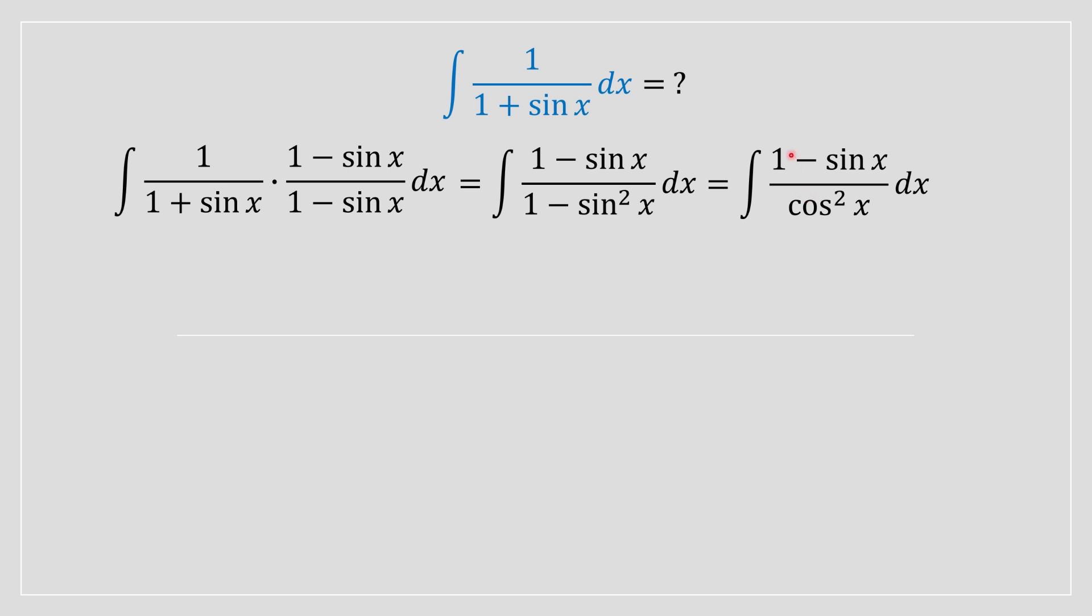Once this has been rewritten, we are going to separate this fraction into two. We can do this by dividing 1 divided by cos squared of x and then doing sine of x divided by cos squared of x, so we can separate the two fractions, the two integrals using integral rules. Once this has been separated, it just renders it a lot easier to solve.